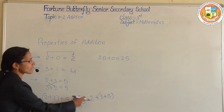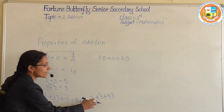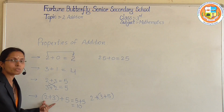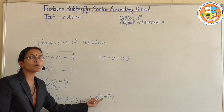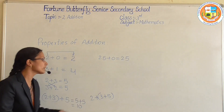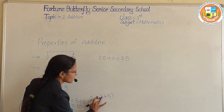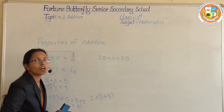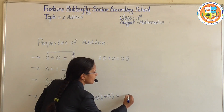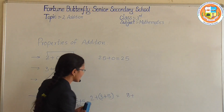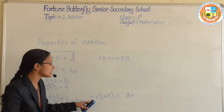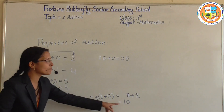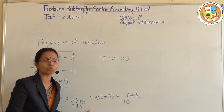Here I am using the same numbers but the brackets are on the last 2 numbers. I grouped the last 2 numbers. So 5 plus 3, which is in the brackets, equals 8. Plus the number left over, which is 2. The answer is 10. Both give 10 and 10. So the grouping property holds in addition.